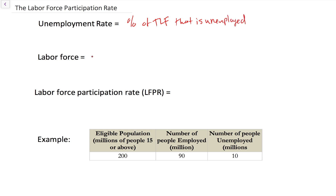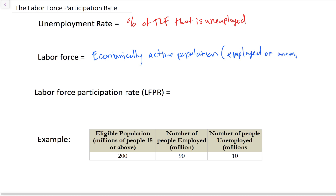So that raises the question: what is the total labor force? The labor force is defined as the economically active population. It includes both the people who are employed or unemployed. In other words, to be part of the labor force, an individual must either have a job — full-time or part-time — or must be actively searching for a job and unable to find one.